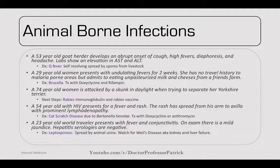A 74-year-old woman is attacked by a skunk in daylight. The next step would be rabies immunoglobulin and rabies vaccine. Quarantine the animal if possible. The rabies vaccine series is given on days 1, 3, 5, 7, 9, 13, and 21 for a 30-day trial.